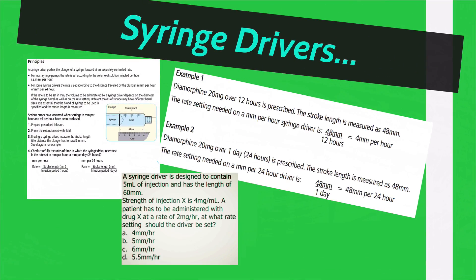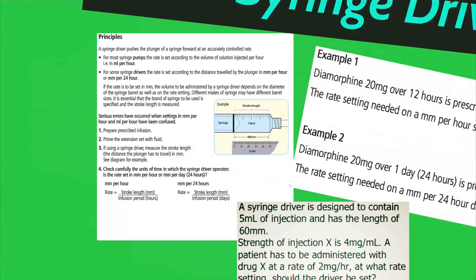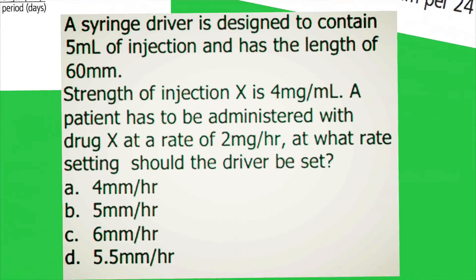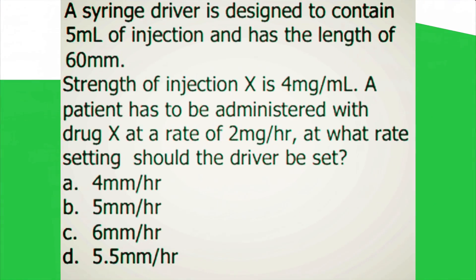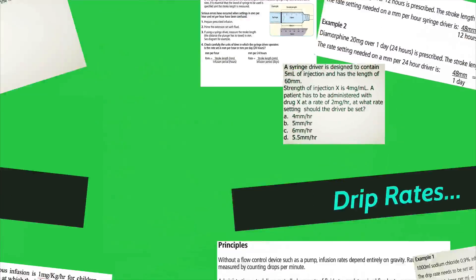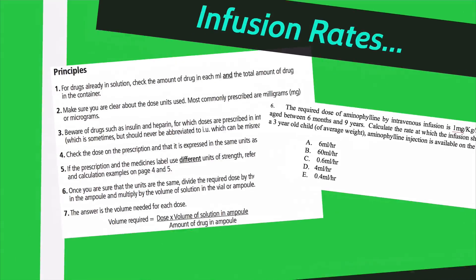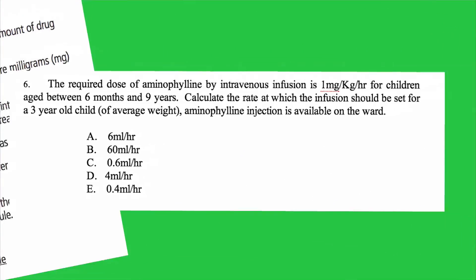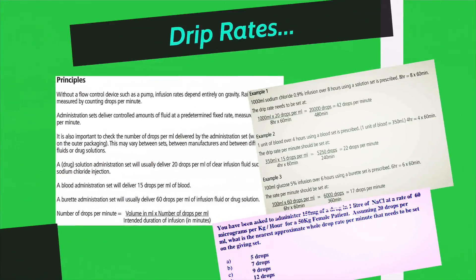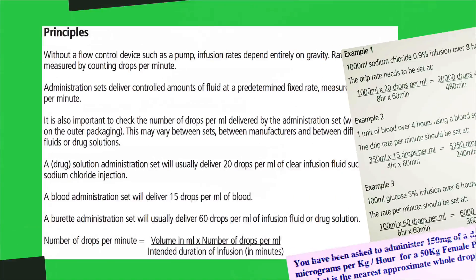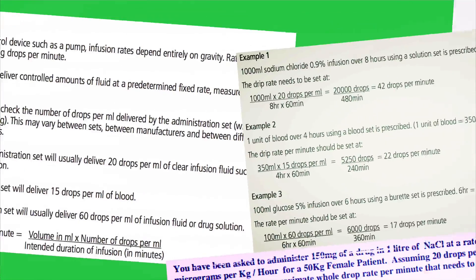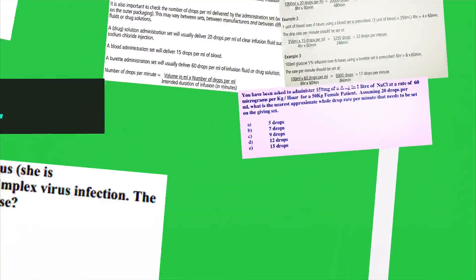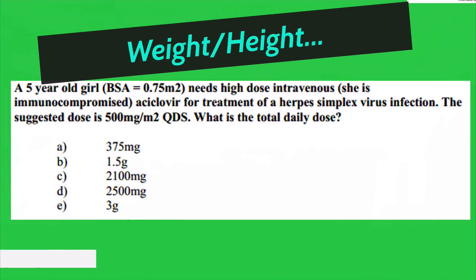The syringe driver question gives you the principles, then goes through a first example, second example, and one of the questions from NAPLEX or the GPhC exam. Infusion rates follow with another question. Drip rates go through the principles and three worked examples, plus one example for you to try. Then we cover weight and height dosages.